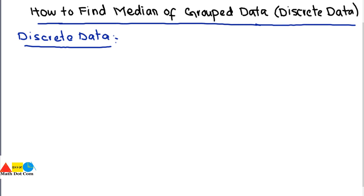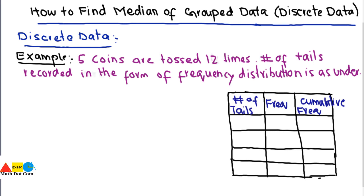First of all, we have an example. We will use this example to understand this method. Five coins are tossed twelve times and the number of tails recorded in the form of frequency distribution is as follows.